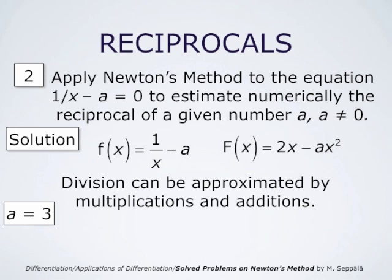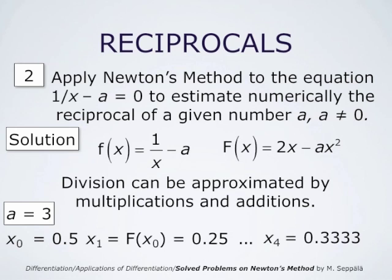Let us see how this works. If a equals 3, we may take x0 to be 0.5. Then x1, capital F at x0, is 0.25. x2 is capital F at x1, x3 is capital F at x2, and finally x4 is capital F at x3. The computation yields 0.3333, a very good estimate already. This allows us to compute reciprocals of numbers — decimal point approximations of these reciprocals — without actually performing divisions at all.